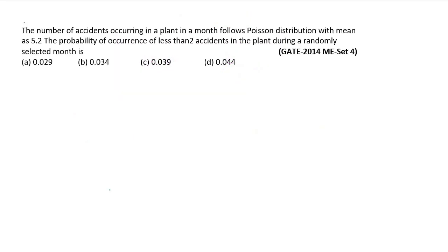Now let us solve this question to understand the Poisson distribution. The number of accidents occurring in a plant in a month follows Poisson distribution with a mean of 5.2. The probability of occurrence of less than 2 accidents in a plant during randomly selected month is: